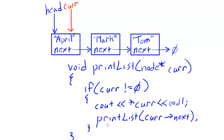Every single time we call this print list function, we are chopping off a little more of our linked list to deal with, so we're working with a smaller and smaller linked list structure on every subsequent recursive call. In this particular case, using a recursive function doesn't necessarily give us an advantage over an iterative approach. In fact, the recursive approach requires more resources because we have to allocate a new stack frame every time we make a recursive call, and all local variables get allocated all over again.